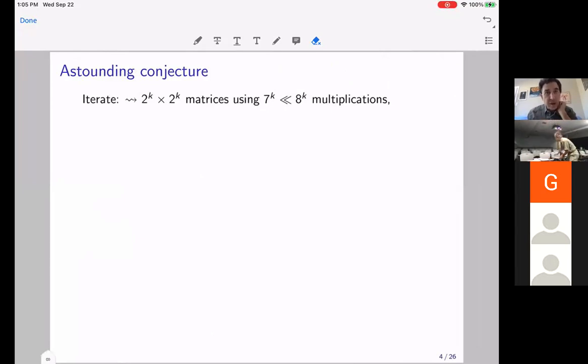And if you iterate this construction, you can multiply two to the K by two to the K matrices using seven to the K, sorry, multiplications instead of eight to the K. And what's interesting is, though, if you were clever and notice that in Strassen's algorithm, there were more additions than the standard. When you iterate, the additions does not grow in such a crazy way.